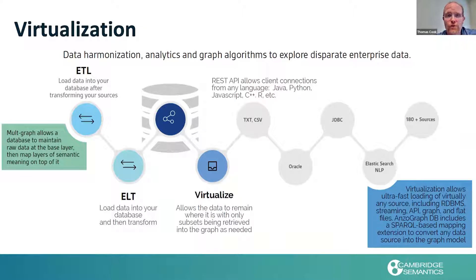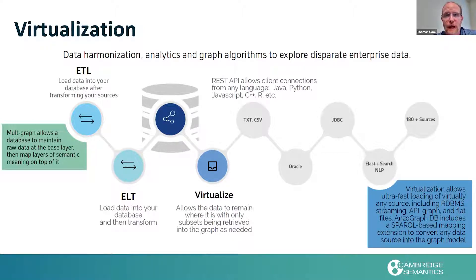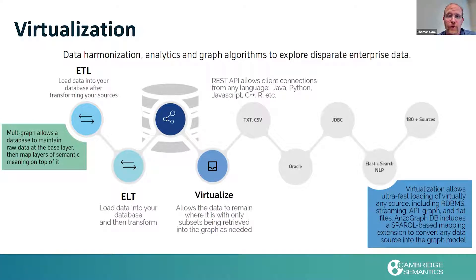We also support data virtualization — the ability to have the graph access non-graph sources underneath, but make it transparent to the user. We can support over 200 different data source types underneath the graph, including JDBC sources, HTTP, CSV, Elasticsearch, etc. You can either materialize that connection and have that data stored in the graph, or have a real-time pass-through query to those underlying sources. This really expands the breadth of our integration capabilities.